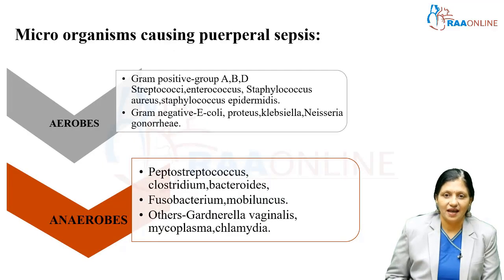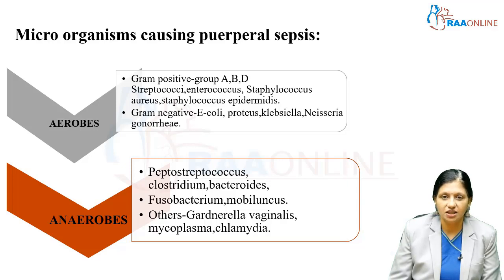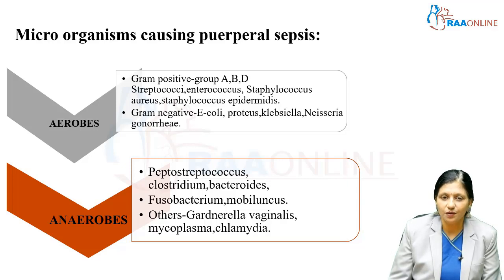The common microorganisms causing Puerperal sepsis can be divided into aerobic and anaerobic. Among the aerobic microorganisms, gram-positive bacteria include Group A, B, and D streptococci, enterococci, Staphylococcus aureus, and Staphylococcus epidermidis. Among the gram-negative aerobic bacteria, we have E. coli, Proteus, Klebsiella, and Neisseria gonorrhoeae.